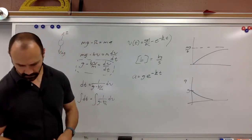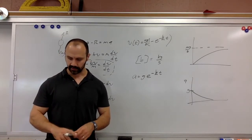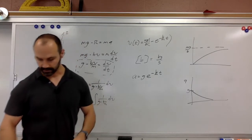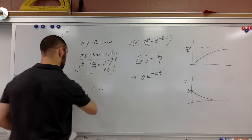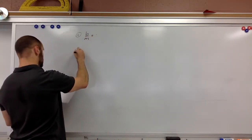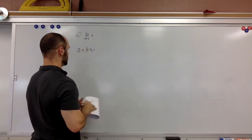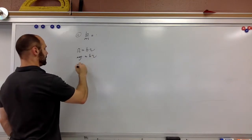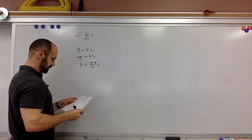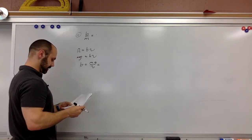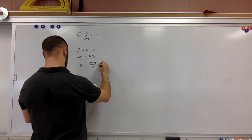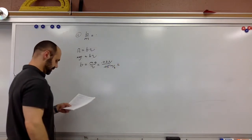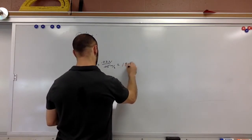Example one: a small sphere of mass 0.002 kg is released from rest in a large vessel filled with oil. The sphere has a terminal velocity of 0.05 m/s. To find the time constant, we first need b. At terminal velocity, the resistive force equals gravity: mg equals bv, so b equals mg over v. With mg equal to 0.002 times 9.8 equals 0.0196 N, divided by 0.05 m/s, b equals 0.392 kg/s. The time constant is m over b.